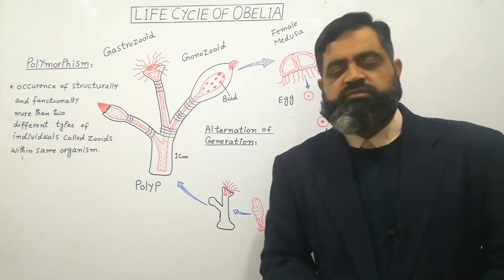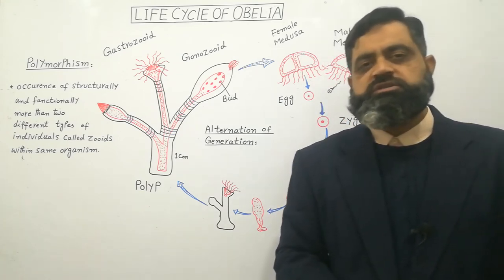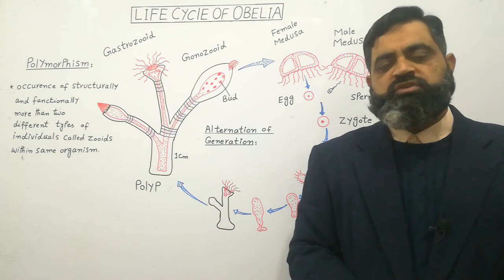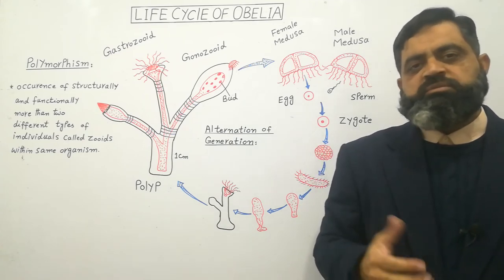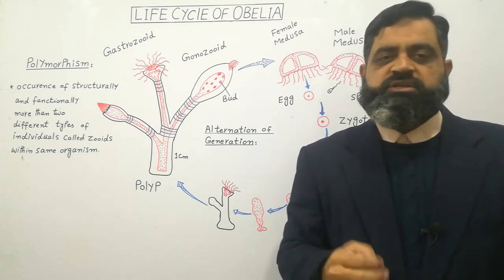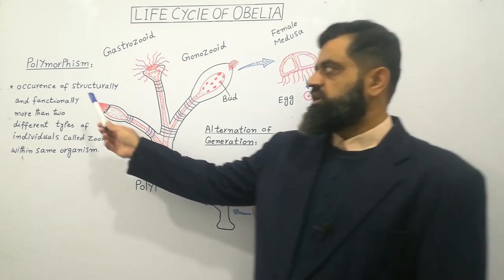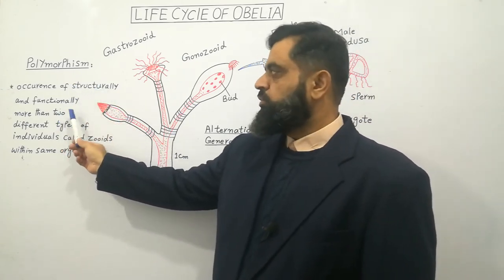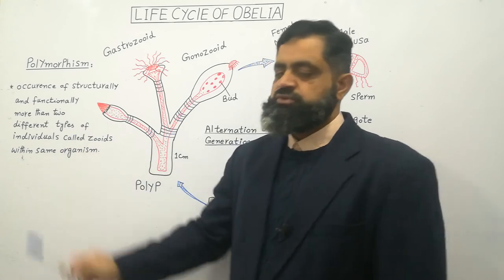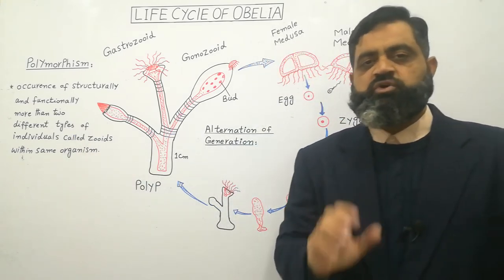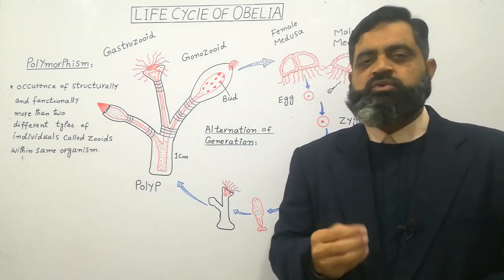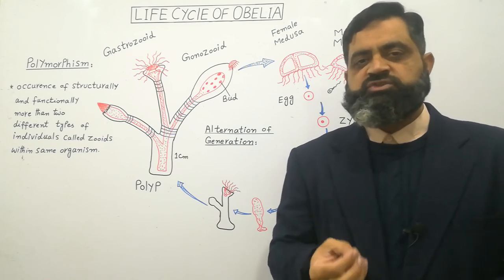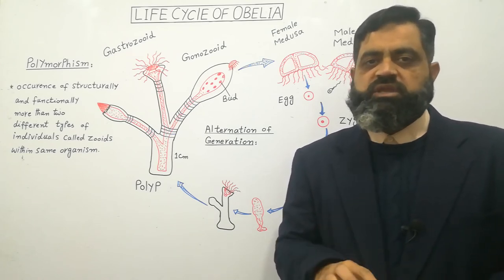There is another phenomenon found in Obelia, which is a colonial cnidarian, known as polymorphism. 'Poly' means many, 'morph' means form, and '-ism' means condition. It is a condition where structurally and functionally more than two different types of individuals, called zooids, occur in the same organism. In this condition, there are different types of animal-like zooids present in the same organism.